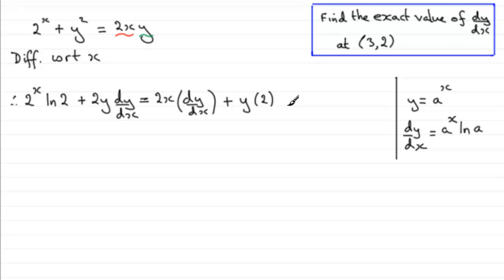So we need to tidy this up, gather up terms, gather up the dy/dx terms and go from there. So what I would want to do is take the 2y to this side, to the left. So we'll take 2y from both sides and we'll take 2y dy/dx from both sides.